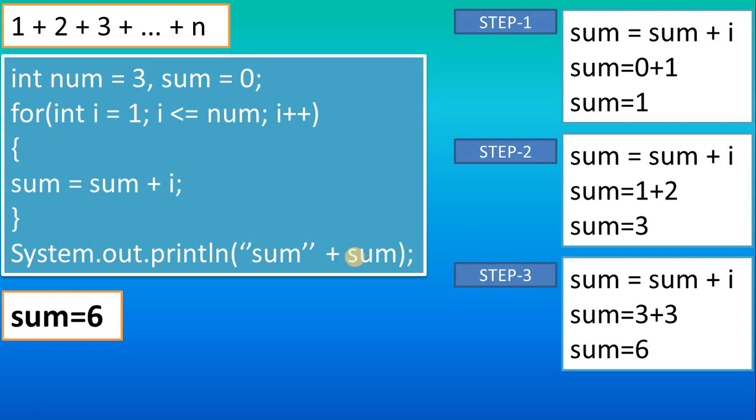I hope you understood this. We have written sum = sum + i, and sum value is 0 so that our logic will be implemented. Every time this step is repeated, sum = sum + i, it is repeated three times.